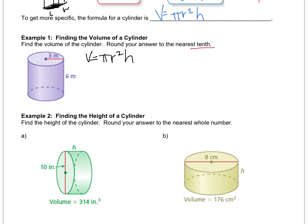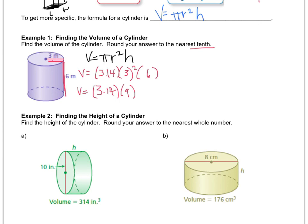Then we plug in what we know. Pi is 3.14, the radius is 3 squared, and the height is 6. Bring down V equals. Remember PEMDAS — grab your calculator. So 3 squared is 9. Bring everything else down: 3.14 times 9 times 6. Straight across multiplication gives V equals 301.44.